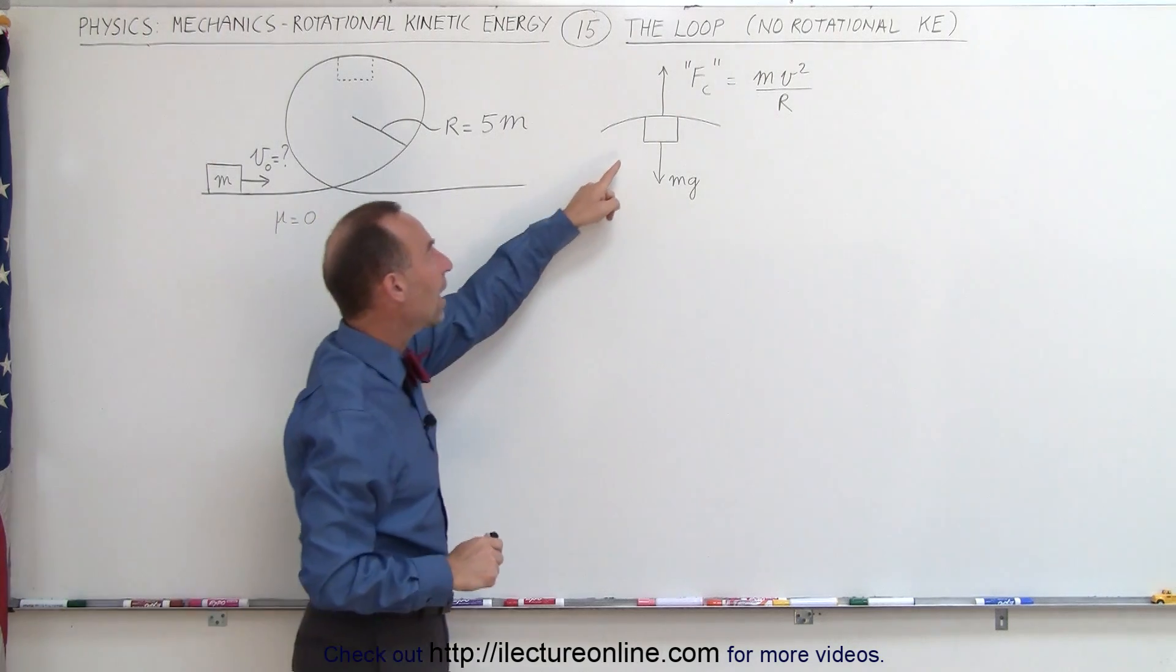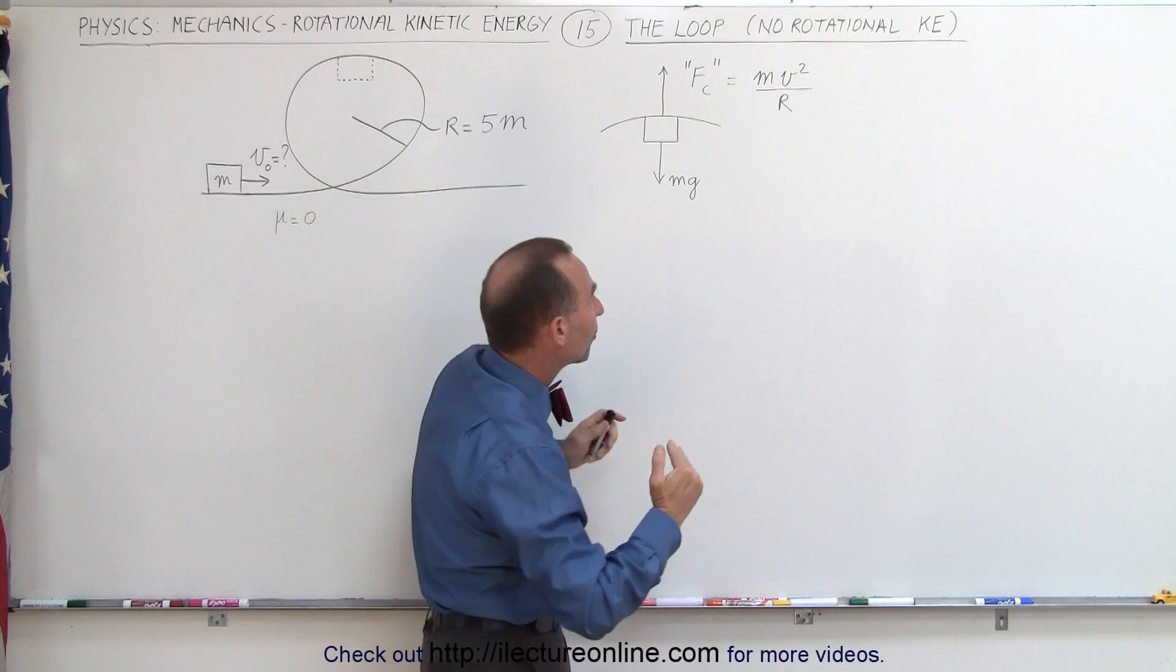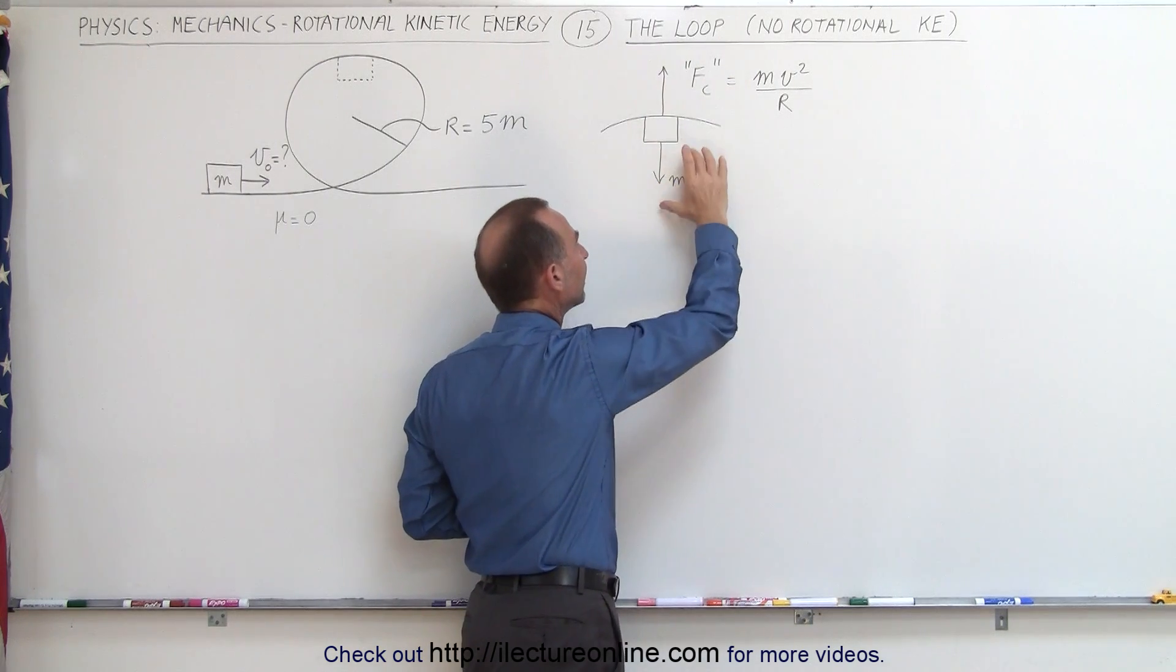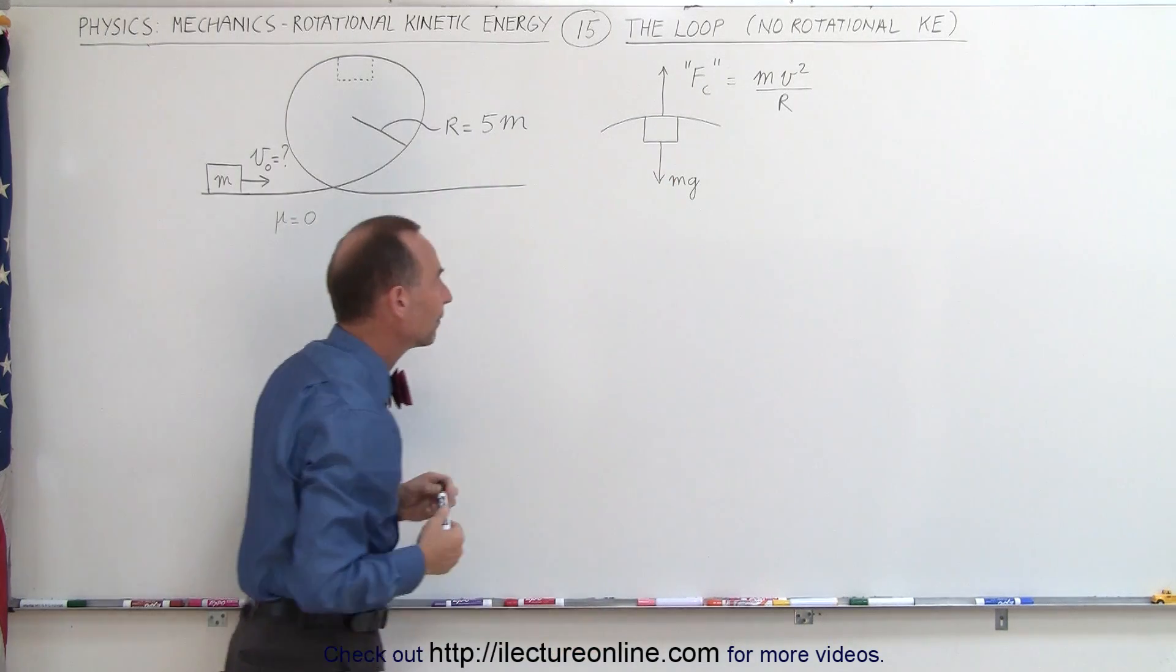The whole idea is when it gets to the top, we want the centrifugal force, that fictitious force that seems to push it to the outside because of its circular motion, to be greater than the weight of the object for it to stay up against the top railing like that.